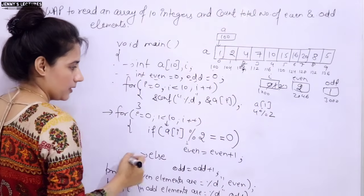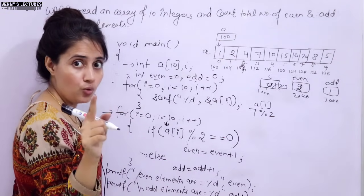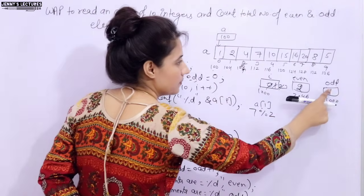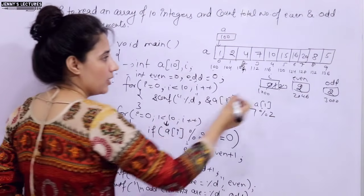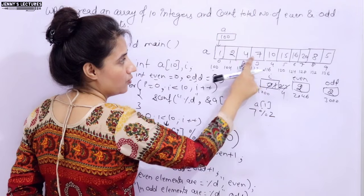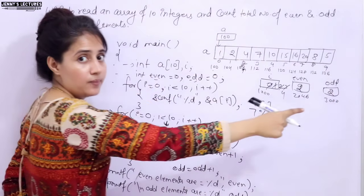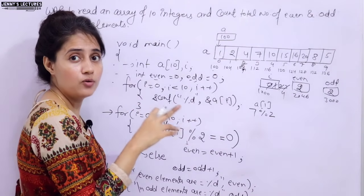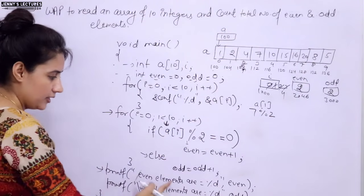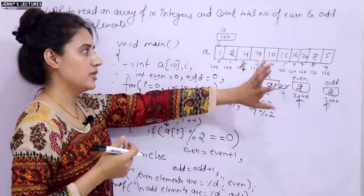i becomes 3, condition true. A[3] is 7. 7 % 2 = 1, which is not 0, so condition is false — we go to else, odd = 1 + 1 = 2. Odd becomes 2. By this point we have 2 even and 2 odd numbers. This continues until i becomes 10, at which point we exit the for loop and print even elements and odd elements.